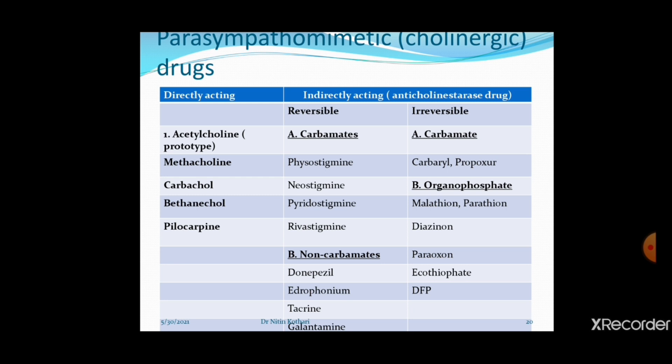Reversible anti-cholinesterase drugs are mainly the carbamate group: physostigmine and neostigmine are the two very important drugs in this group. Other carbamates include pyridostigmine and rivastigmine. The suffix '-stigmine' indicates the carbamate group, and these carbamates are reversible in nature — so stigmines are reversible carbamates.